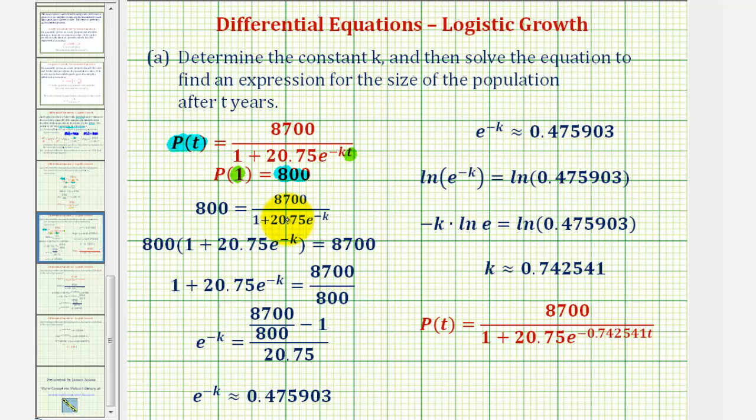The next step, we'll clear this fraction by multiplying both sides of the equation by this quantity. Notice how the fraction is gone from the right, and we have this extra factor on the left. Our goal is to solve for e^(-k). First, we'll divide both sides by 800.